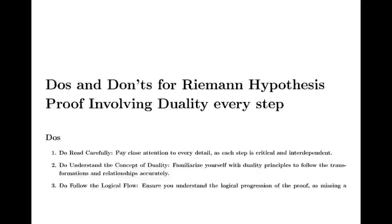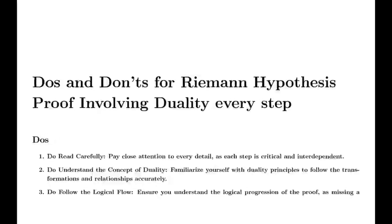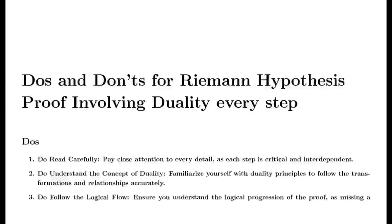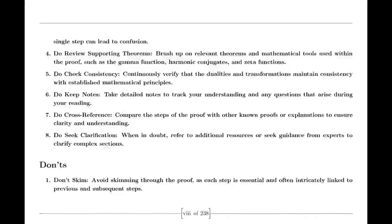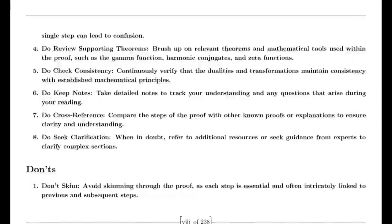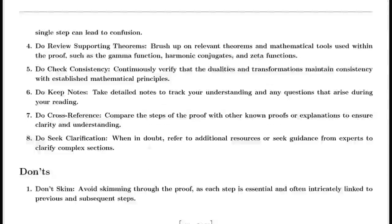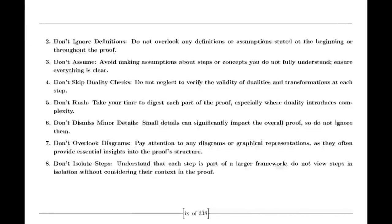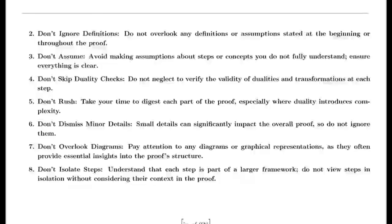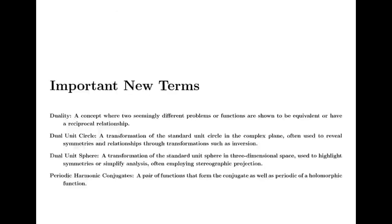Euler also tackled the Basel problem, which was concerned with finding the exact sum of the reciprocals of the squares of the integers. By examining the sine function and its product representation, Euler derived a formula showing that this sum equals π²/6. This result was a significant achievement in mathematics, highlighting Euler's ability to uncover connections between different mathematical concepts.